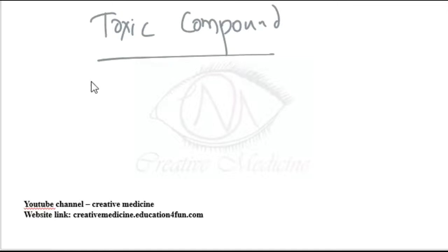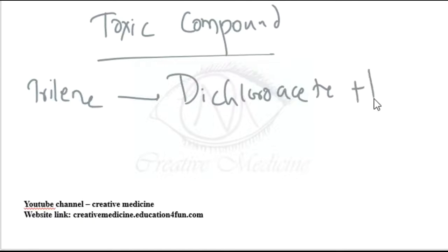Trilene produces dichloroacetic acid which is neurotoxic, and it also produces phosgene which produces acute respiratory distress syndrome. So dichloroacetic acid is neurotoxic, phosgene causes acute respiratory distress syndrome.